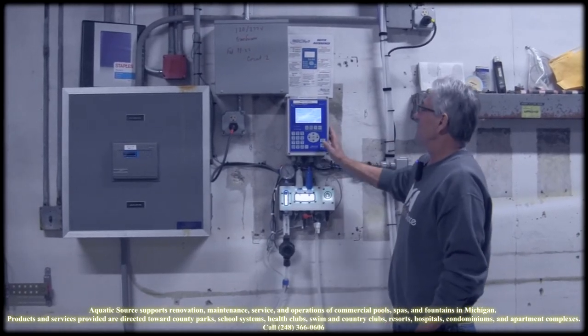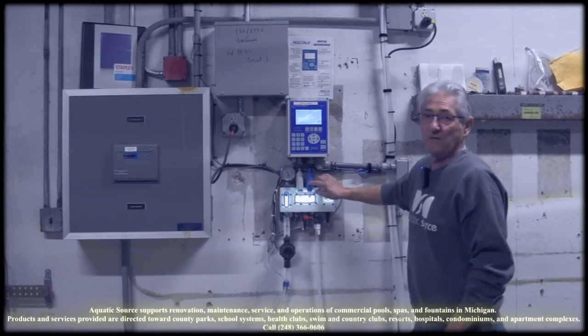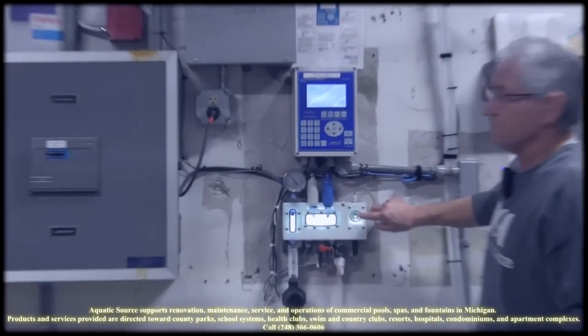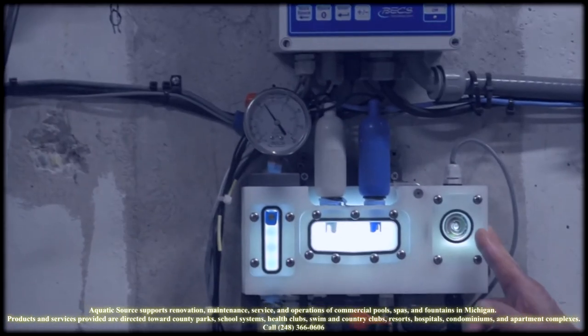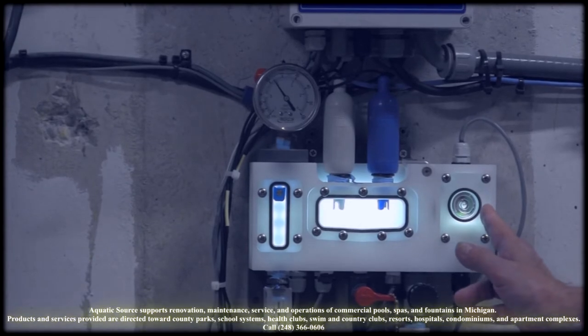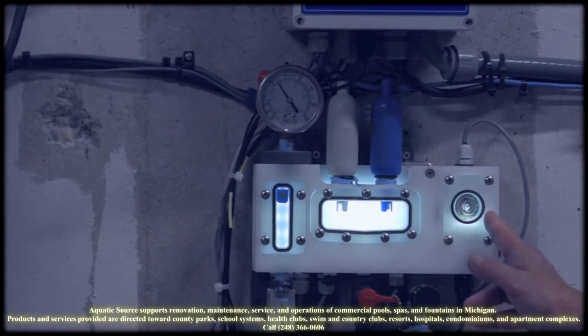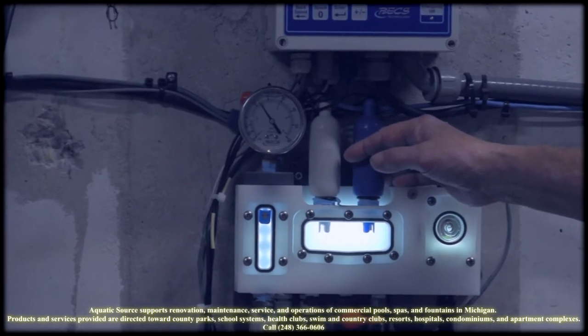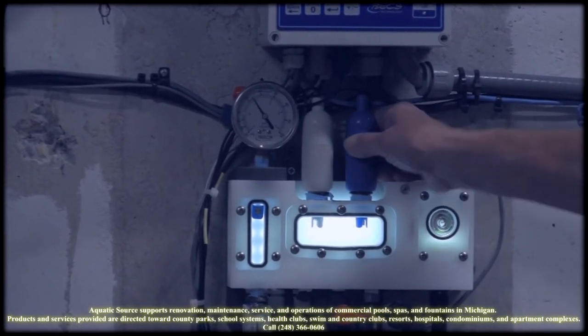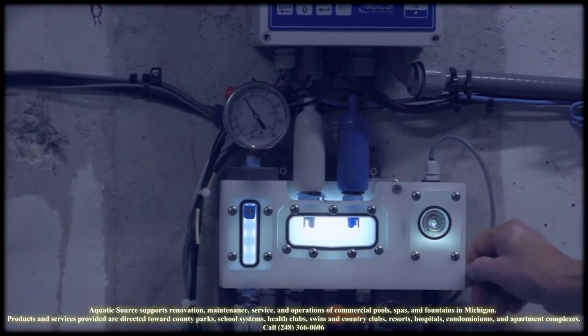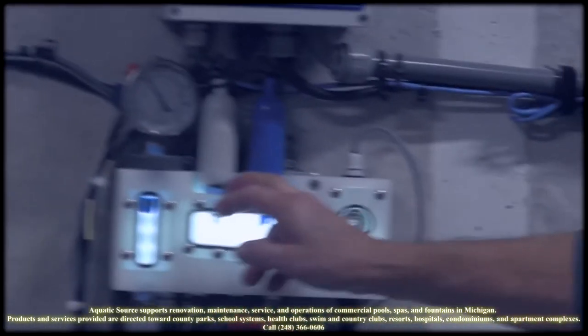Another thing we've got is this unit has an ORP probe, which is how well the chlorine works. But we're also controlling a free chlorine probe, so it actually is calibrated and matches up with your test kit. Where a lot of the other units only use an ORP probe, it's harder for some of your lifeguards to understand how it correlates to your pool.